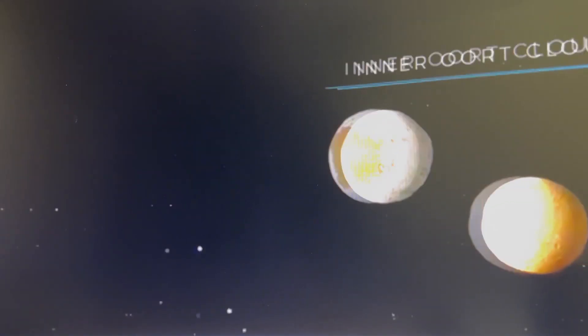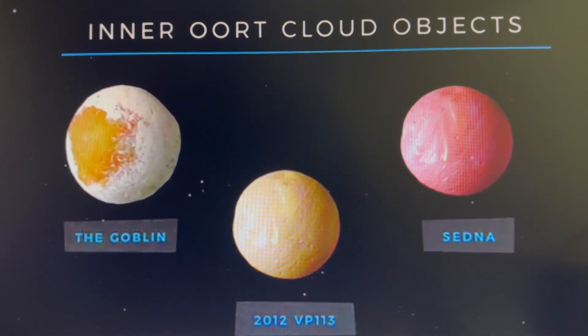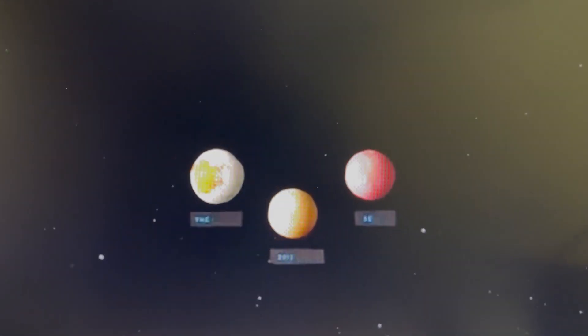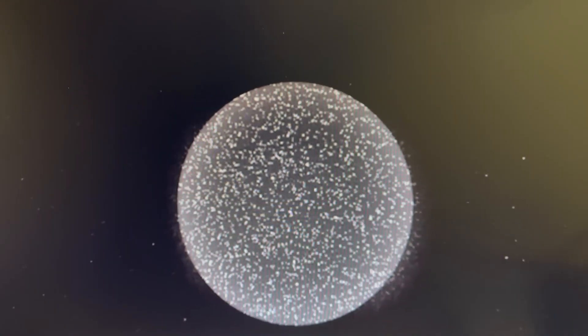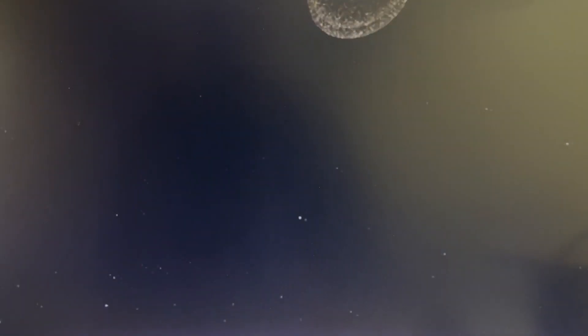For now, the sample size of these distant objects is just too small to draw any conclusions. But NASA says the Oort cloud may contain more than a trillion icy bodies, so it's likely that new discoveries could increase the possibility of a potential phantom planet.